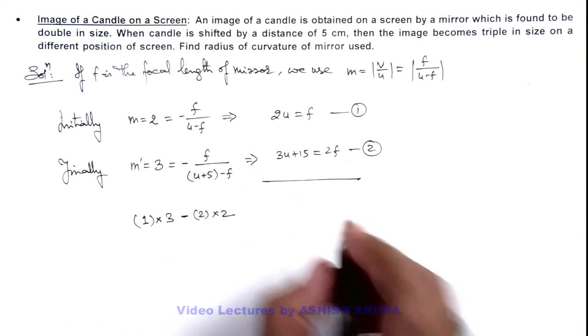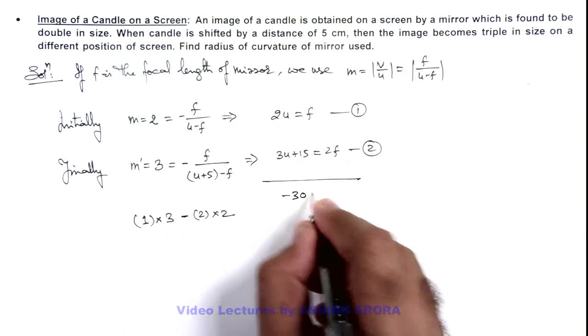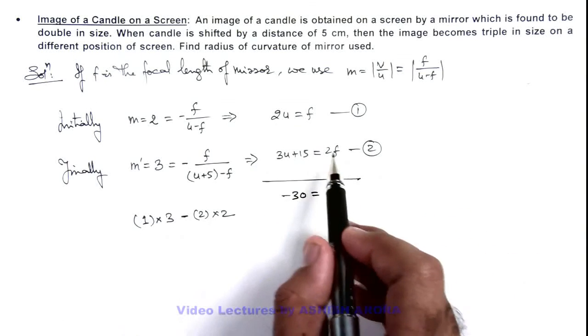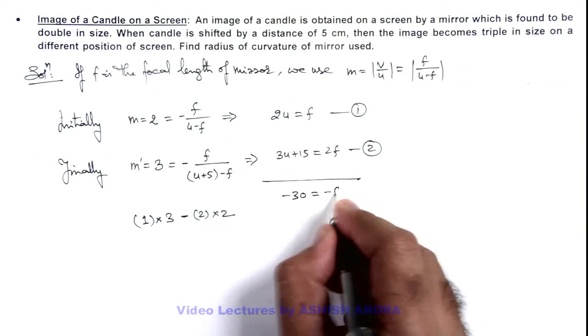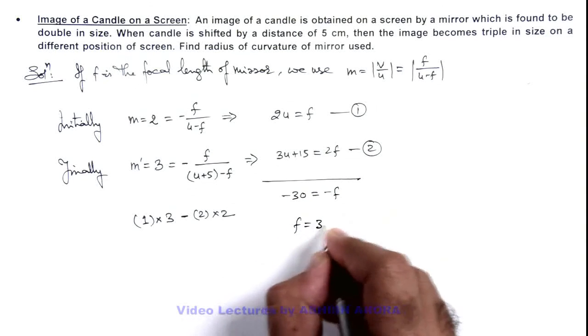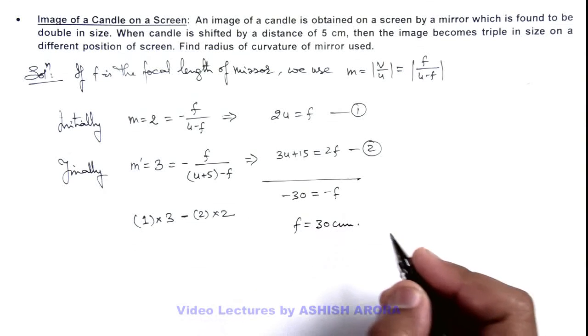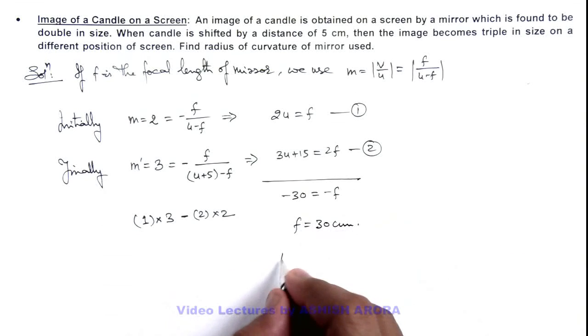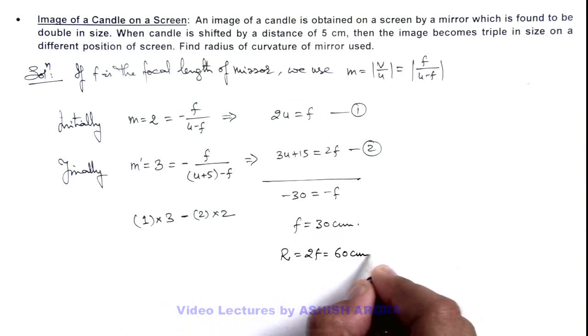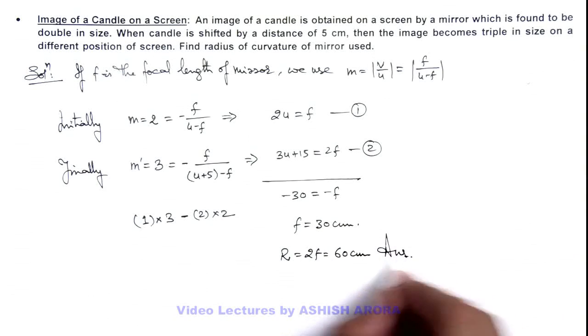Here the left-hand side will become minus 30 and the right-hand side will be minus 4 plus 3, which is minus f. That means the focal length we are getting is 30 centimeters. So we can directly write the radius of curvature of this mirror is 2f, that is equal to 60 centimeters. That is the final result of this problem.